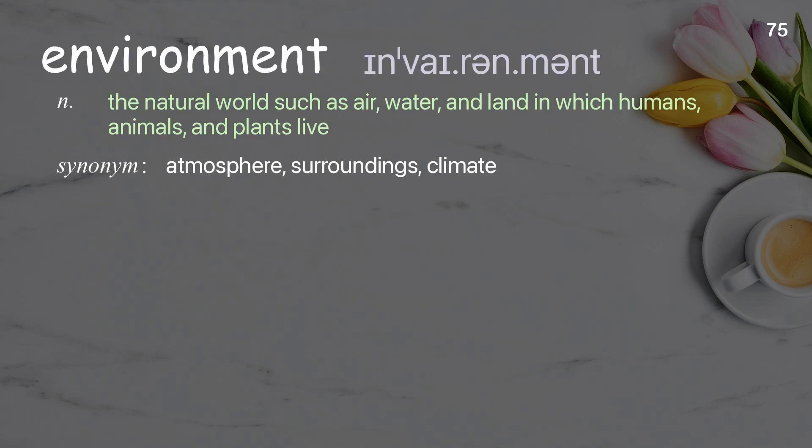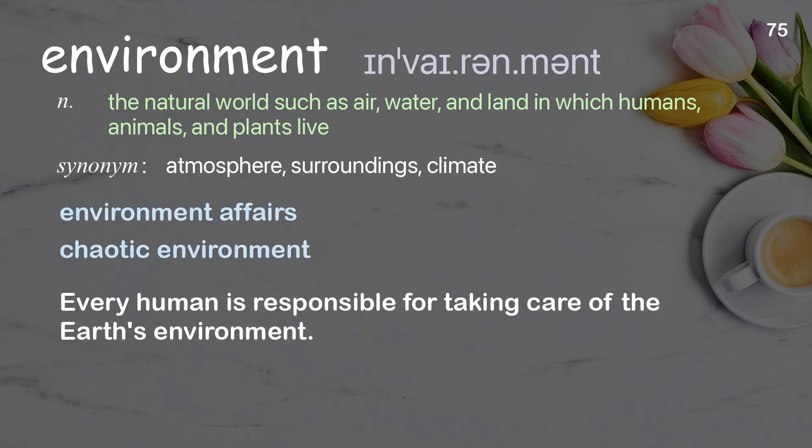Environment: the natural world such as air, water, and land in which humans, animals, and plants live. Examples: environment affairs, chaotic environment. Every human is responsible for taking care of the Earth's environment.